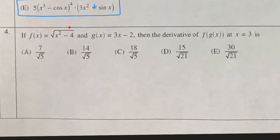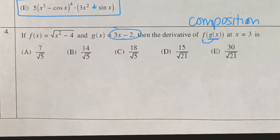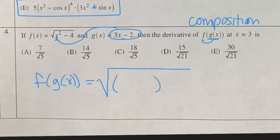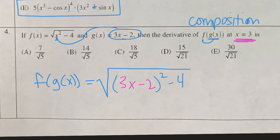Here we have two functions — f is a square root function and g is the other. The question asks for the derivative of the composition f of g. That means we take the g function and plug it into f. So our composition is the square root of (3x minus 2) squared minus 4. Since we have to plug in x equals 3, we don't necessarily have to simplify all the way — we can plug and chug.